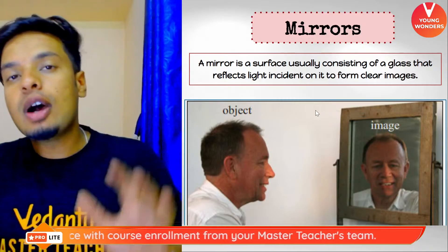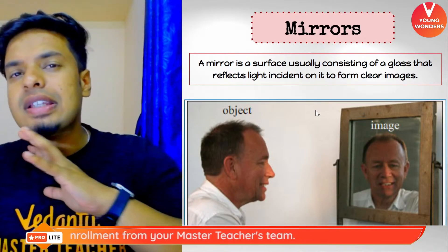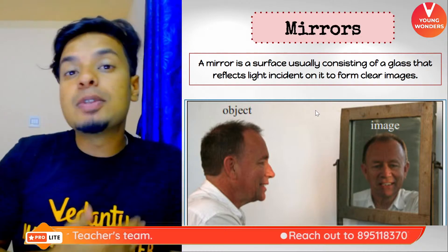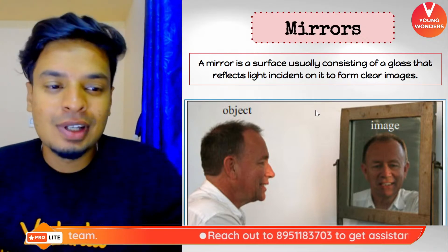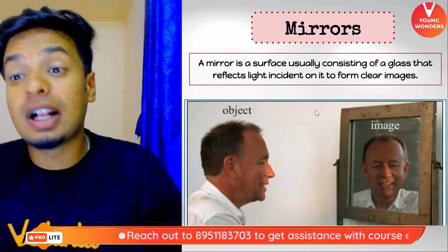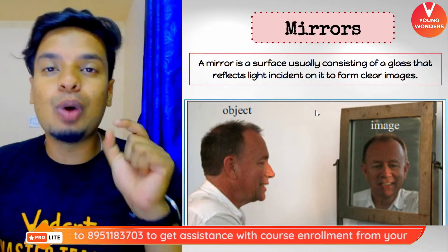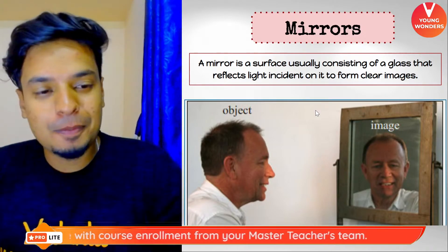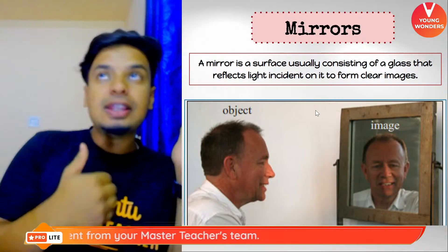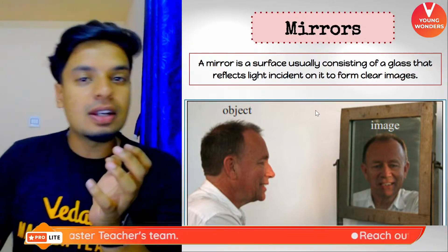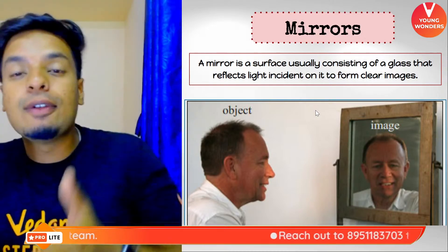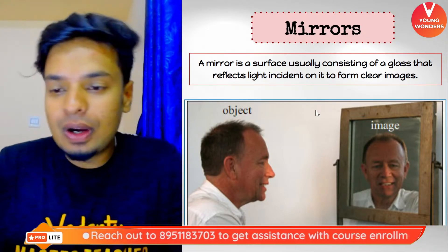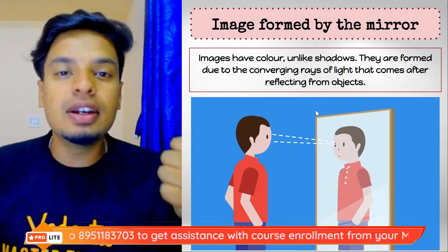A mirror is generally a surface usually consisting of glass, but behind the glass it is coated with silver so that it becomes an opaque object and reflects light. So a mirror is a surface that reflects the light incident on it to form clear images. 'Incident' means falling on it — the ray that is going and falling on the mirror is the incident ray.